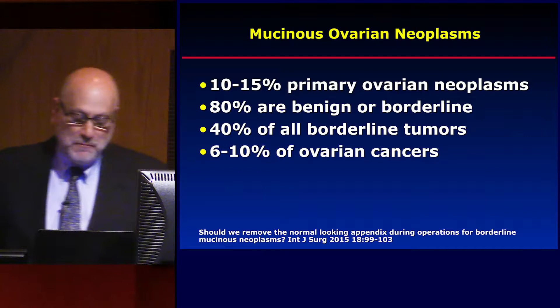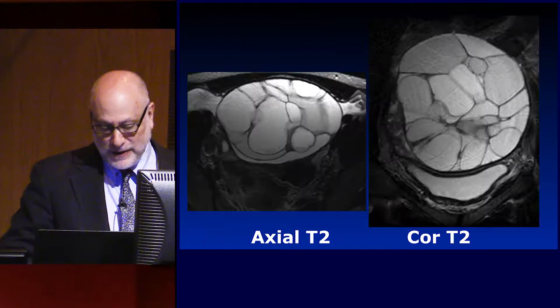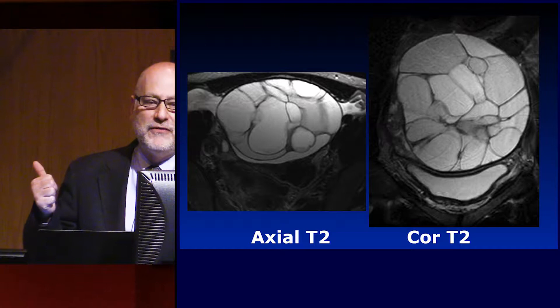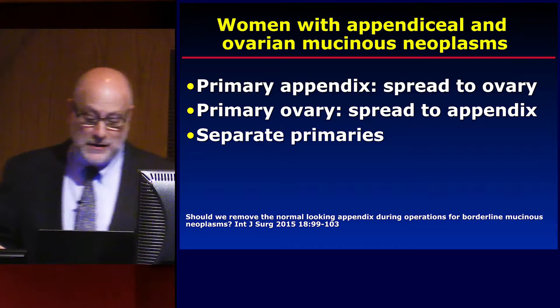Third-to-last topic: mucinous ovarian neoplasms. This is one subtype of ovarian neoplasms — an example of a primary benign mucinous ovarian neoplasm. They tend to be large, and this is the one type of ovarian neoplasm where size does not correlate with malignancy. It's multi-loculated but there are no solid components, this patient had no ascites and no implants.